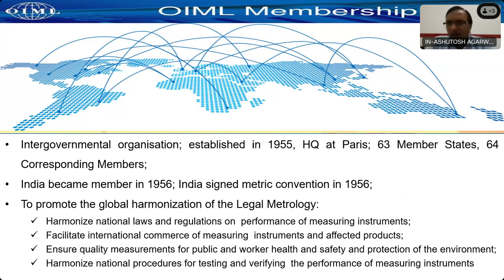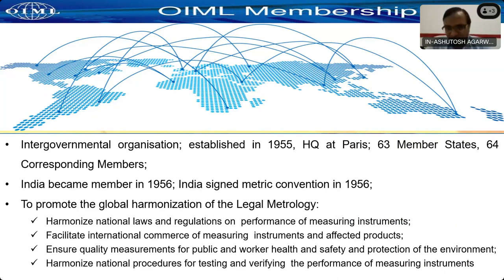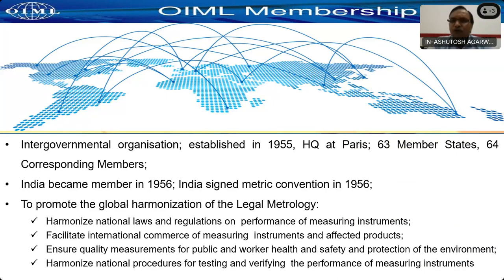All Legal Metrology organizations throughout the world are members of the OIML — International Organization of Legal Metrology. It was established in 1955. India became its member in 1956. In 1956, India also signed the Metre Convention and obtained the national prototype of mass, that is 1 kg in terms of IPK56. India signed the Metre Convention and at the same time became a member of OIML and BIPM.